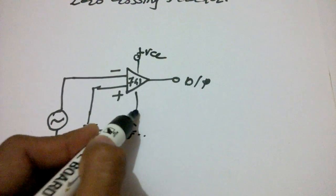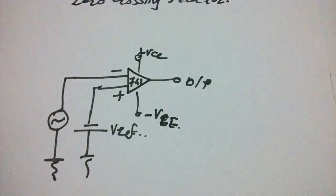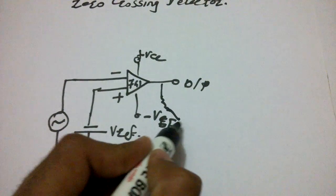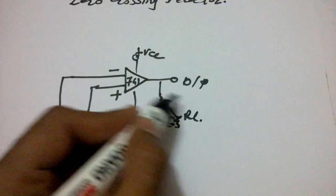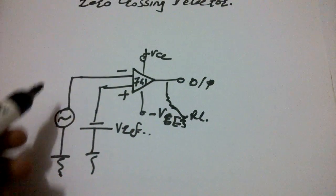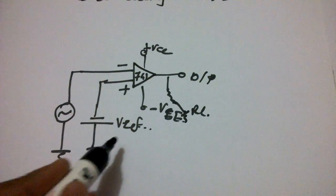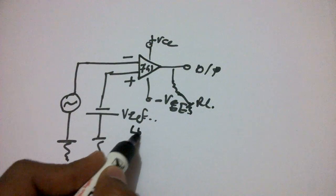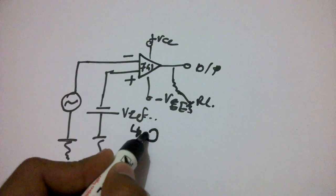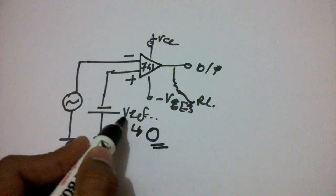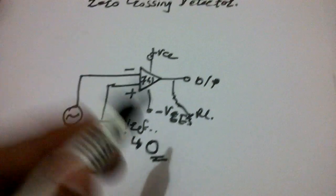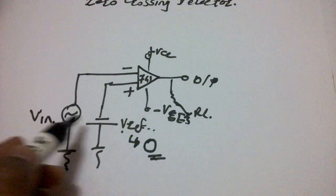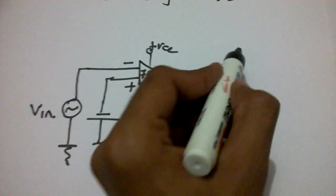We have plus VCC and minus VEE, and one load resistance RL for the output across the load resistance. This is the basic zero crossing detector circuit. From the basic comparator, we use V reference as a hole, but for a zero crossing detector we use zero as the V reference. This system shows us when the input voltage signal crosses the zero signal.